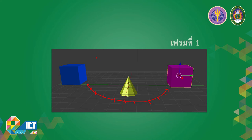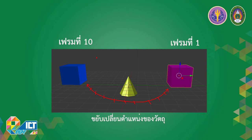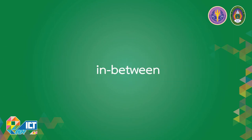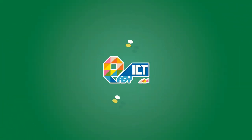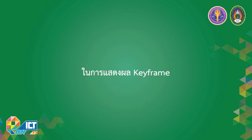ตัวอย่างเช่น หากเรามีการกำหนด Keyframe ที่บริเวณ Frame ที่ 1 และกำหนด Keyframe ที่บริเวณ Frame ที่ 10 พร้อมทั้งขยับปรับเปลี่ยนตำแหน่งของวัตถุ โปรแกรมจะทำการคำนวณการเคลื่อนไหวของวัตถุจาก Frame ที่ 1 ไปจนถึง Frame ที่ 10 โดยอัตโนมัติ เราเรียกการทำงานแบบนี้ว่าการทำ In-between ในการแสดงผล Keyframe จะแสดงเป็นเส้นสีเหลืองบนไทม์ไลน์